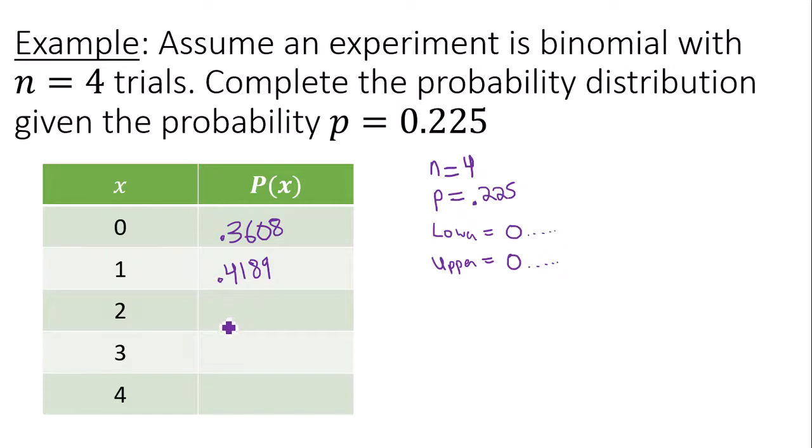X is 2, the probability is 0.1824. X is 3, the probability is going to be 0.0353. X is 4, the probability is going to be 0.0026.